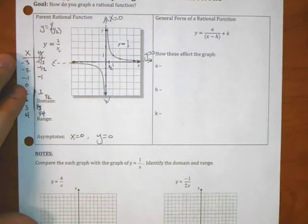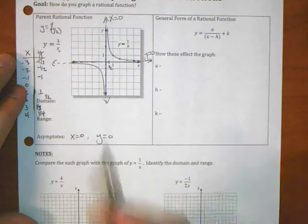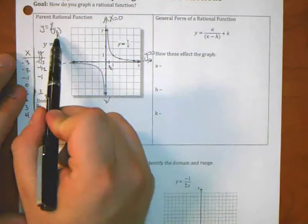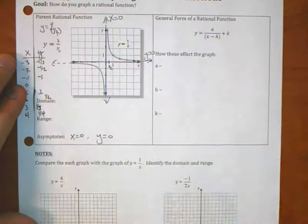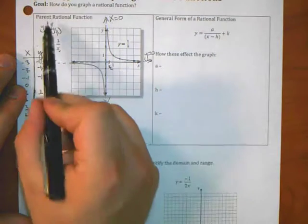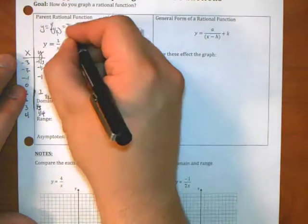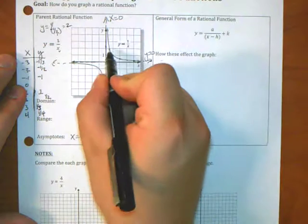Remember what the reciprocal means? The opposite in terms of flipping. So, if I flip the second guy and multiply, if I flip a half, that gives me 2, and multiply by the top, you get 1. So, what's 1 times 2? 2. So, then if I'm at a half, I go up 2.